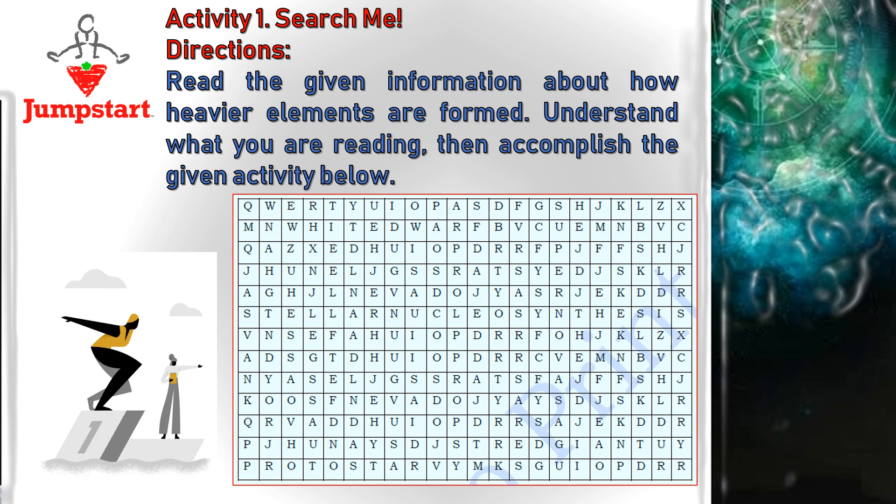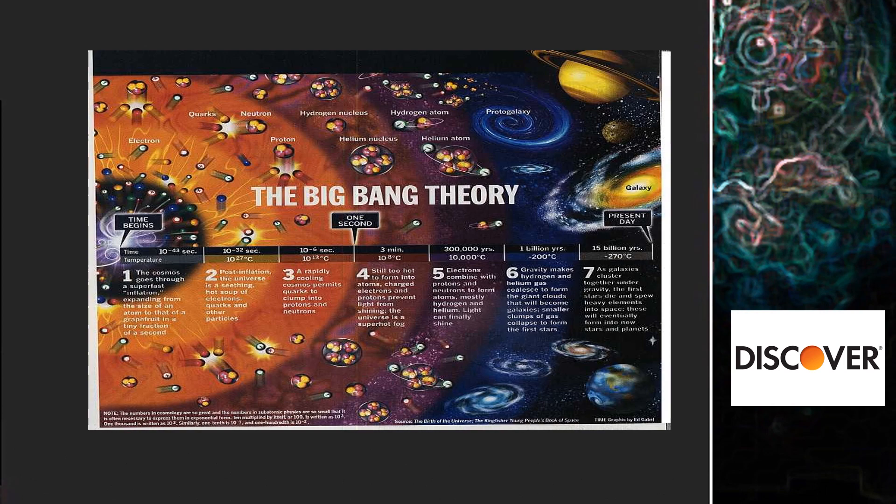The activity on the Jumpstart part are all essential for you to understand the content of this module, which is how the elements found in the universe were formed. Before proceeding with the discussion, let us have a short recall on the different concepts that we are going to use in tackling the different parts of this module under Discover in page 5 to 8. The early existence of the universe is believed to be the start of all matter. Approximately 13.8 billion years ago, light elements such as hydrogen, helium, and a little of lithium emerged in the universe from the Big Bang.